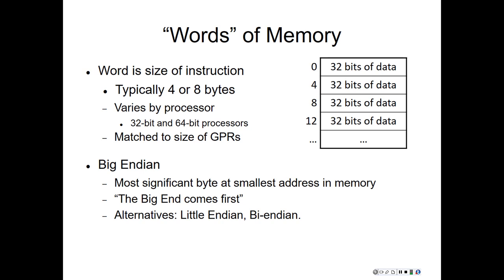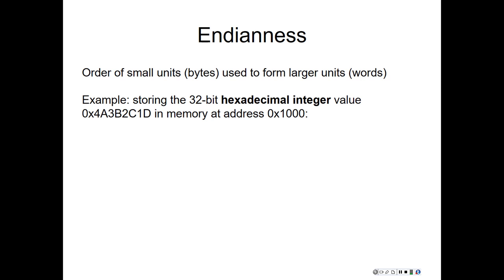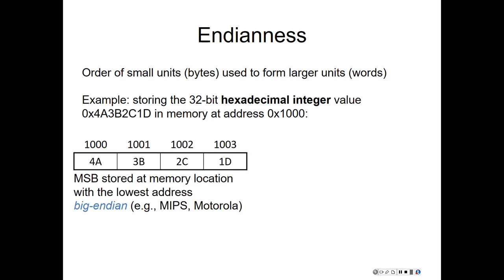Alternatives to big-endian include little-endian and bi-endian. As an example, let's consider storing the 32-bit hexadecimal value 4A3B2C1D into memory at an address starting at hexadecimal 1000.